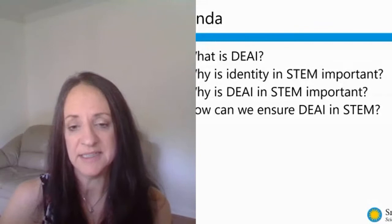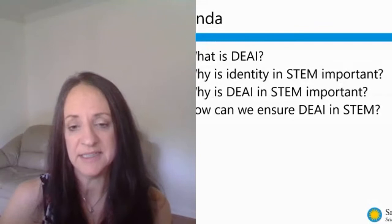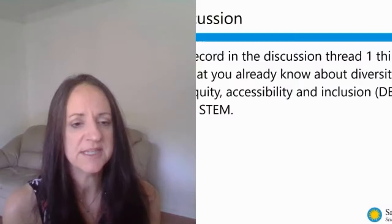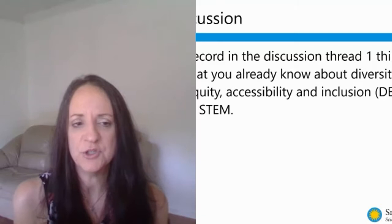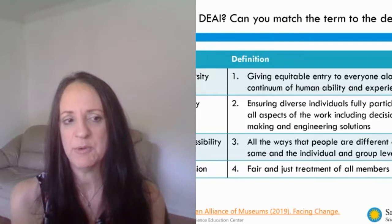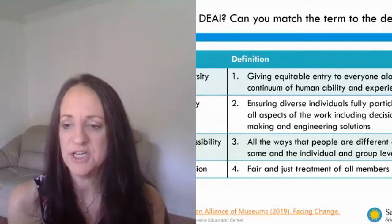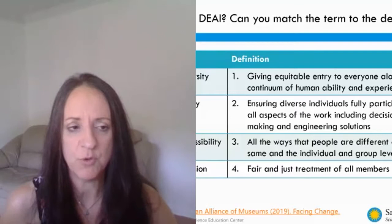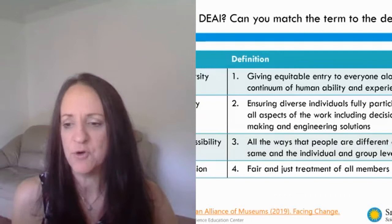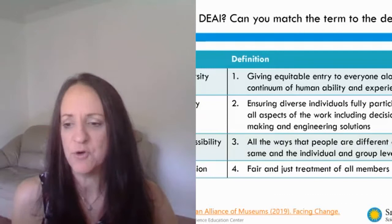In the chat box, Christine Royce defines accessibility as ensuring all students have the ability to get all the materials, resources, and supplies needed. That is really important because diversity, equity, accessibility, inclusion — we've got to make certain the A is included. The next slide gives four different terms and four different definitions, and participants are asked to match a term with a definition in the chat box — just pick one, such as 'A and two' or 'A and four.'